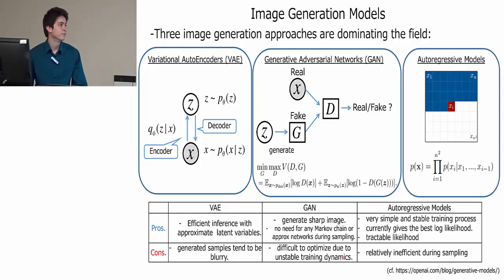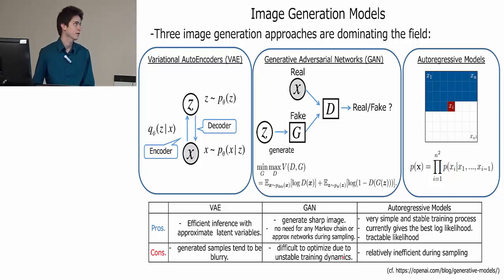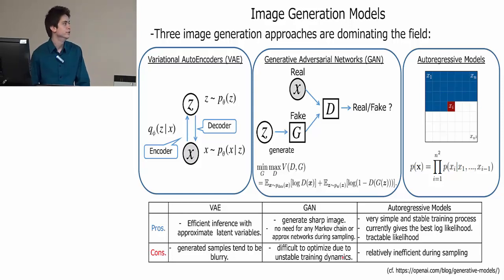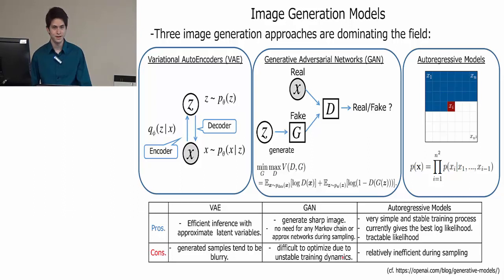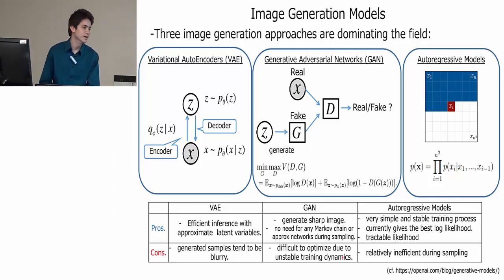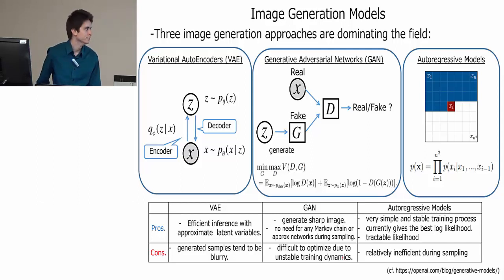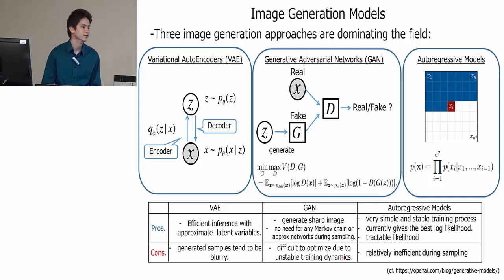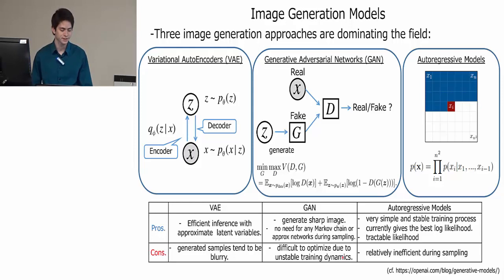Lastly, there's autoregressive models, which Pixel RNN is one of. They directly model the distribution of pixels, which makes it simple and has a stable training process. This also gives the best test set results on log likelihood. Unfortunately, it makes it relatively inefficient when doing generation — it takes a long time to generate an image.